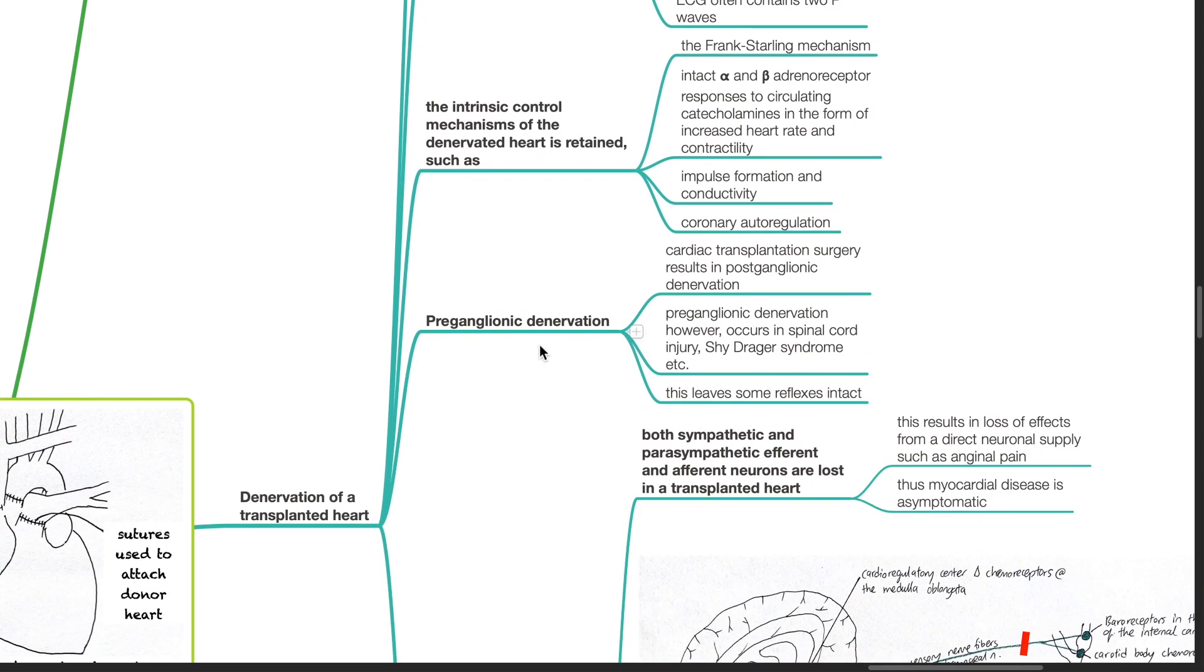Pre-ganglionic denervation. Cardiac transplantation surgery results in post-ganglionic denervation. However, pre-ganglionic denervation occurs in spinal cord injury, Shy-Drager syndrome and other conditions. This leaves some reflexes intact.